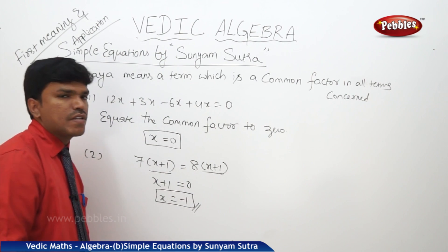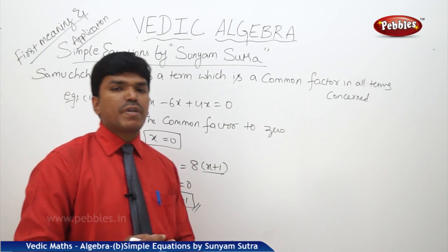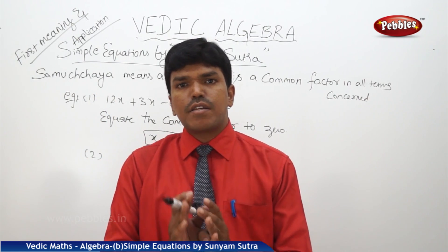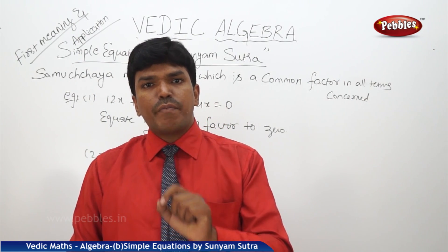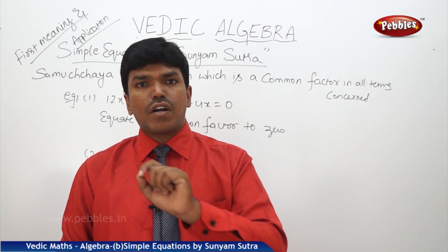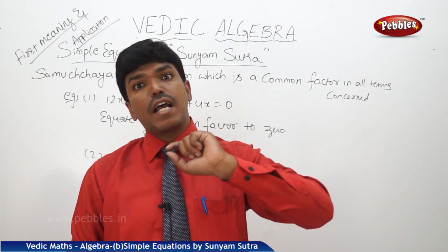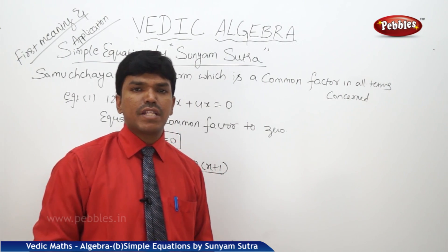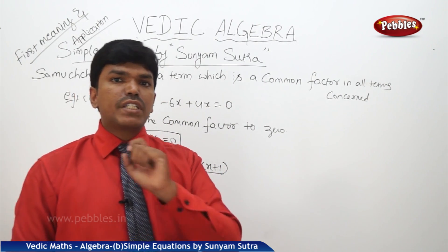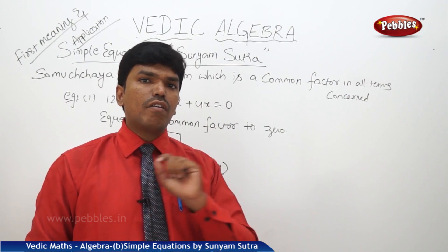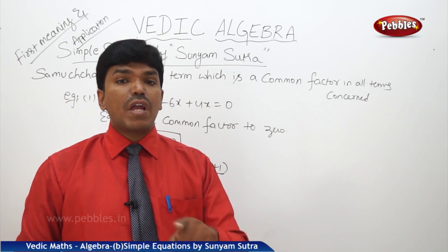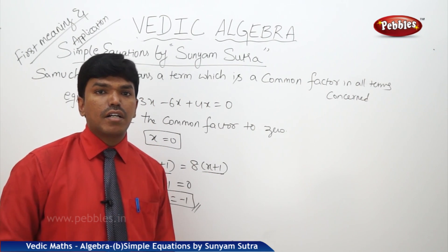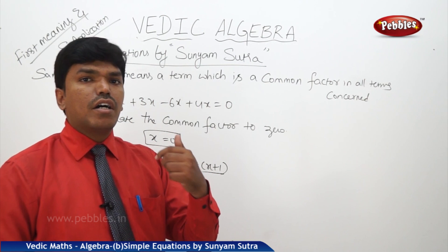So, the first meaning of Samuchaya Sutra is: Samuchaya means a term which occurs as a common factor in all the terms concerned. That term we equate to 0 to get the solution. Now let us see the second meaning and its application.